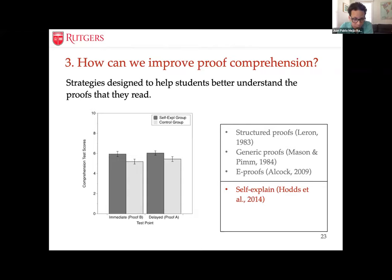One of the most compelling studies was done in a classroom setting — not a lab — with students randomly assigned to self-explanation training or a control condition. They gave a delayed post-test 20 days after training: students were shown a different proof and given a proof comprehension test. The self-explanation group showed comprehension gains immediately after training, and crucially, those gains were retained 20 days later. This is a positive example of a way to help students improve proof comprehension.